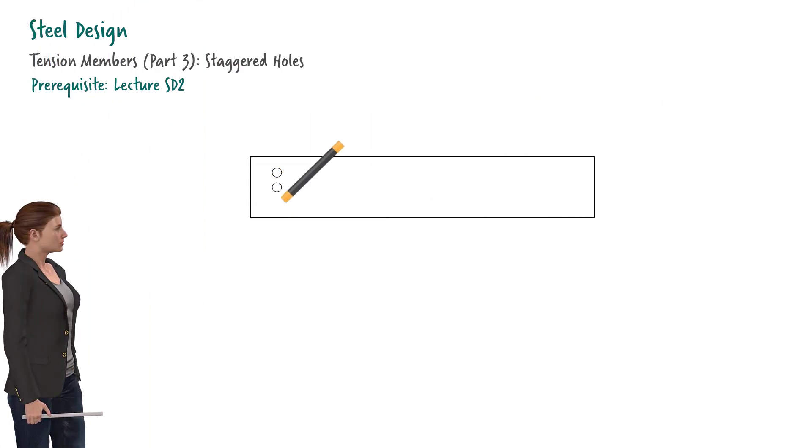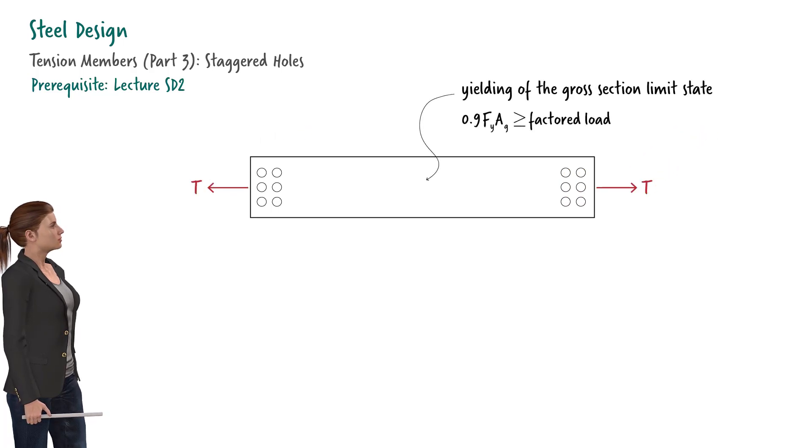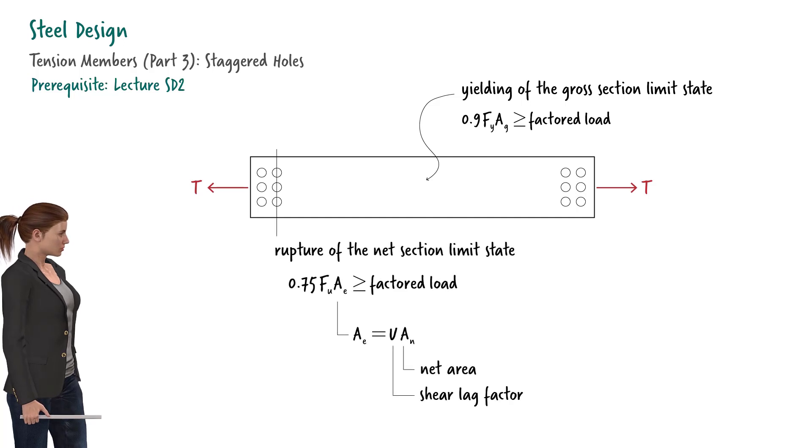In the previous lectures, we talked about two governing limit states for the design of tension members: yielding of the gross section and rupturing of the net section.